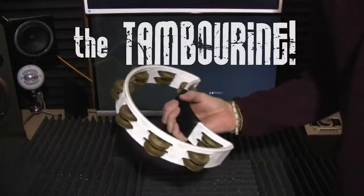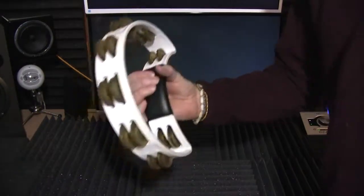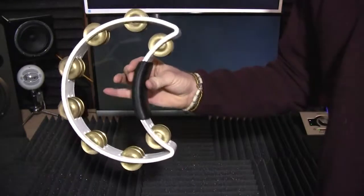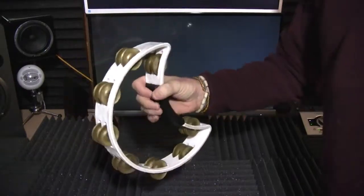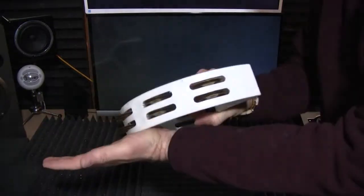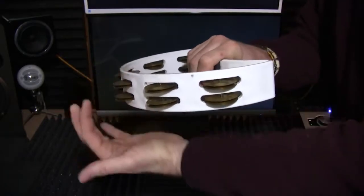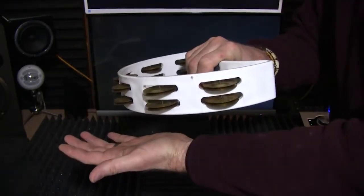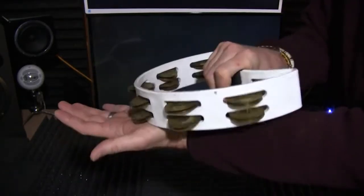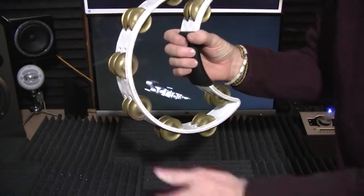So first up is the tambourine, and this is my Rhythm Tech tambourine. Notice how it's shaped. You can hold it in the middle. You can play it this way and it deadens these a little bit more so you get more of a staccato sound, as opposed to the more sustained.